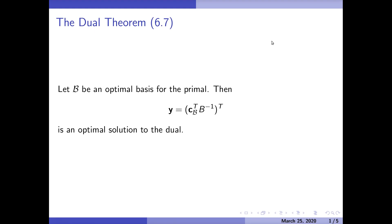Okay, today we're going to be talking about the dual theorem. The dual theorem states that if script B is an optimal basis for the primal, then we can compute the optimal solution to the dual by computing this quantity: y equals c_B transpose times B inverse. This transpose is just to make y into a column instead of a row.